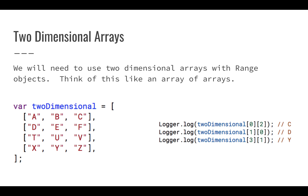For example, row zero, column two gives us C — that's the first array at index position two. Row one, column zero gives us D. And row three, column one gives us Y — because in the array [X,Y,Z], index zero is X, index one is Y, and index two is Z. So row three, index one gives us Y.